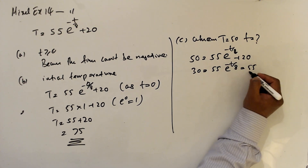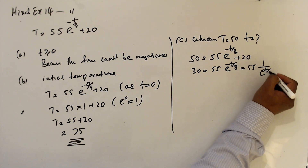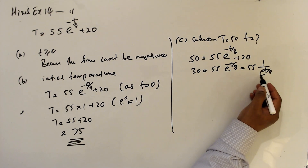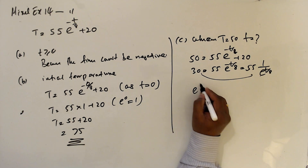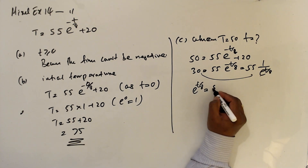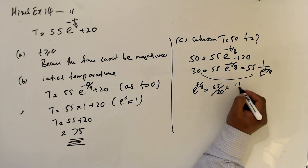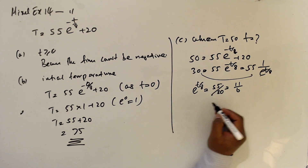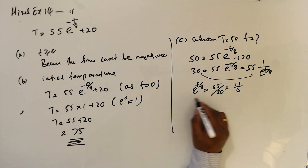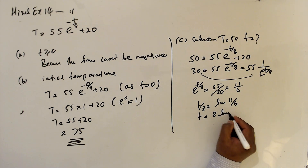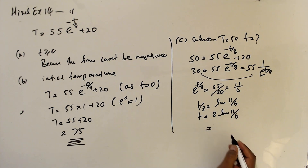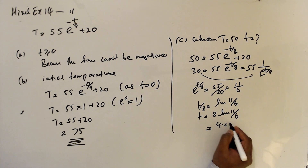This becomes 30 over 55 equals 1 over e to the power t over 8. Making it positive and cross-multiplying gives e to the power t over 8 equals 55 over 30, which simplifies to 11 over 6 by dividing by 5. Taking the natural log: t over 8 equals ln(11/6), so t equals 8 ln(11/6), which is approximately 4.89 — about 5 minutes.